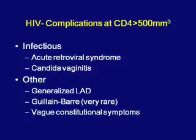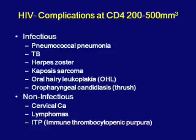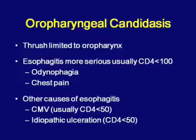Oropharyngeal candidiasis is thrush limited to the oropharynx, but if the CD4 count is under 100 it can become more extensive, leading to esophagitis with odynophagia or chest pain. A 25- to 30-year-old with chest pain could have candida esophagitis. CMV (cytomegalovirus) can also cause esophagitis when the CD4 count is less than 50, as can idiopathic aphthous ulcers. Treatment differs for each, so the specific cause must be identified.